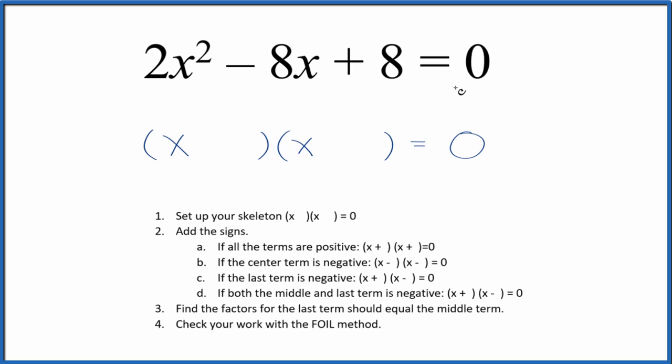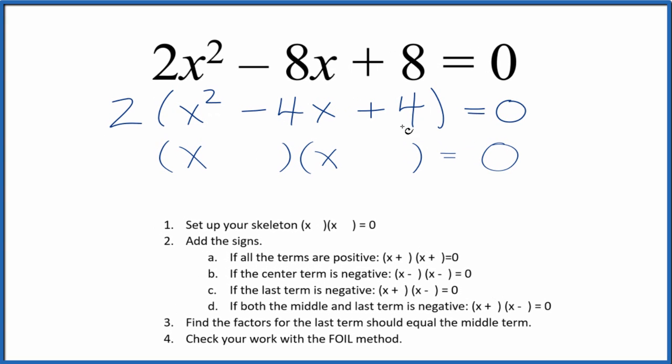The first thing to do is we see that we have 2, 8, and 8. So we could divide each of these by 2 and simplify this down. When we do that, we get x squared minus 4x plus 4. That's a lot easier to factor.